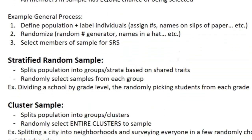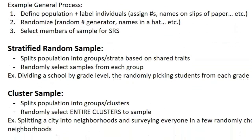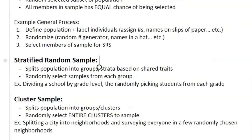The confusing part with stratified random sample is there's a very similar method called cluster sample. You're splitting the population into groups or clusters, but then randomly selecting entire clusters. An example of that is splitting a city into neighborhoods and surveying everyone in a few randomly chosen neighborhoods.